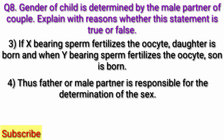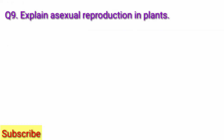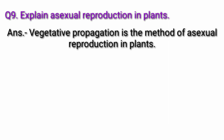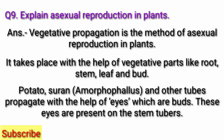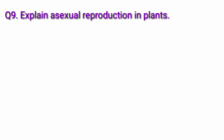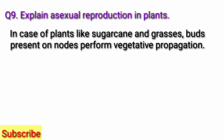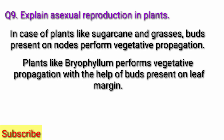Question 9: Explain asexual reproduction in plants. Answer: Vegetative propagation is the method of asexual reproduction in plants. It takes place with the help of vegetative parts like root, stem, leaf, and bud. Potato, suran, amorphophallus, and other tubers propagate with the help of eyes, which are buds. These eyes are present on the stem tubers. In plants like sugarcane and grasses, buds present on nodes perform vegetative propagation. Plants like bryophyllum perform vegetative propagation with the help of buds present on the leaf margin.